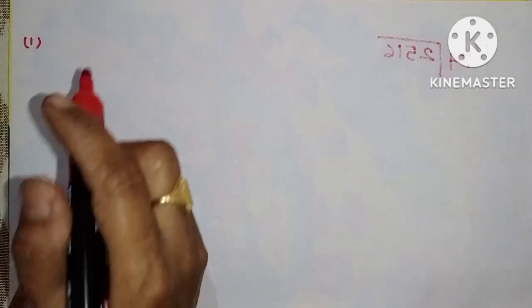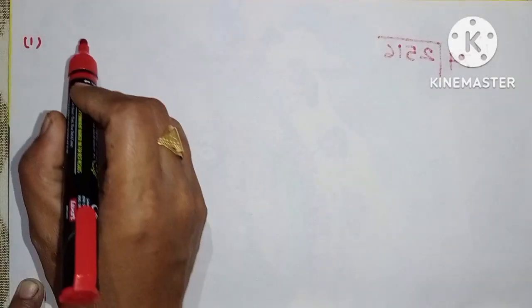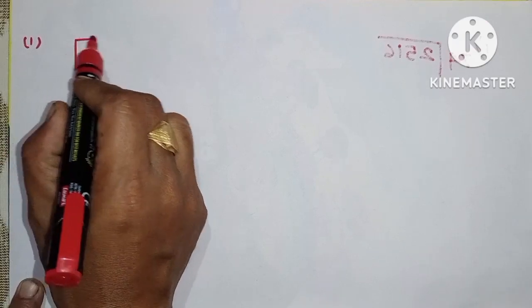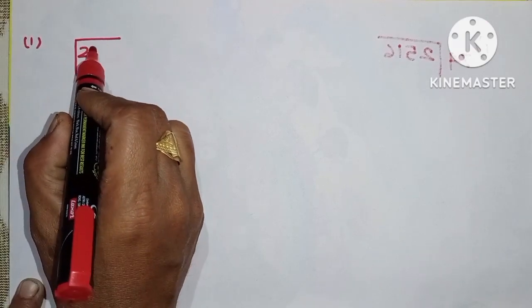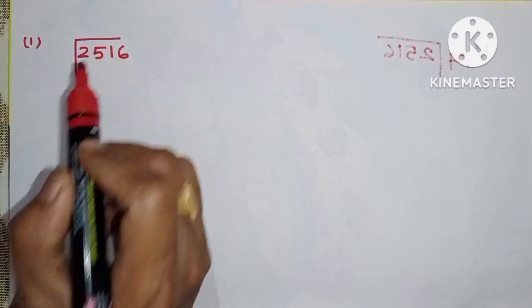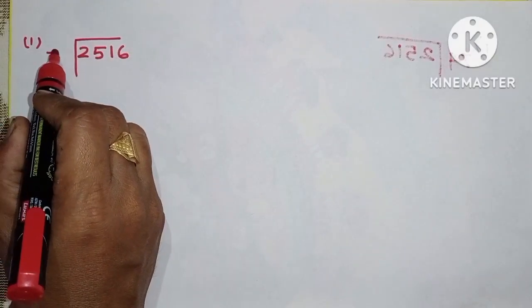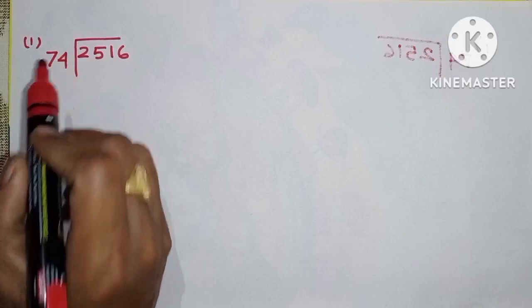Now I am going to give this video to the end of the video. The first example is 2516 divided by 74.